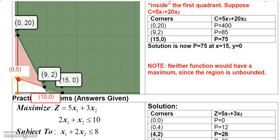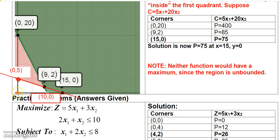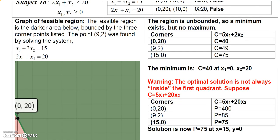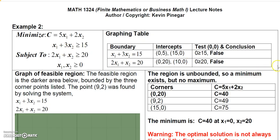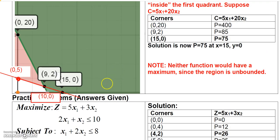So we identify the points (0, 5) and (15, 0) on the grid, and connect them to get that line. When we test the origin (0, 0) in the inequality, we get a false statement, which means we must shade everything above this line. We draw arrows showing the shading direction — that side of the line.